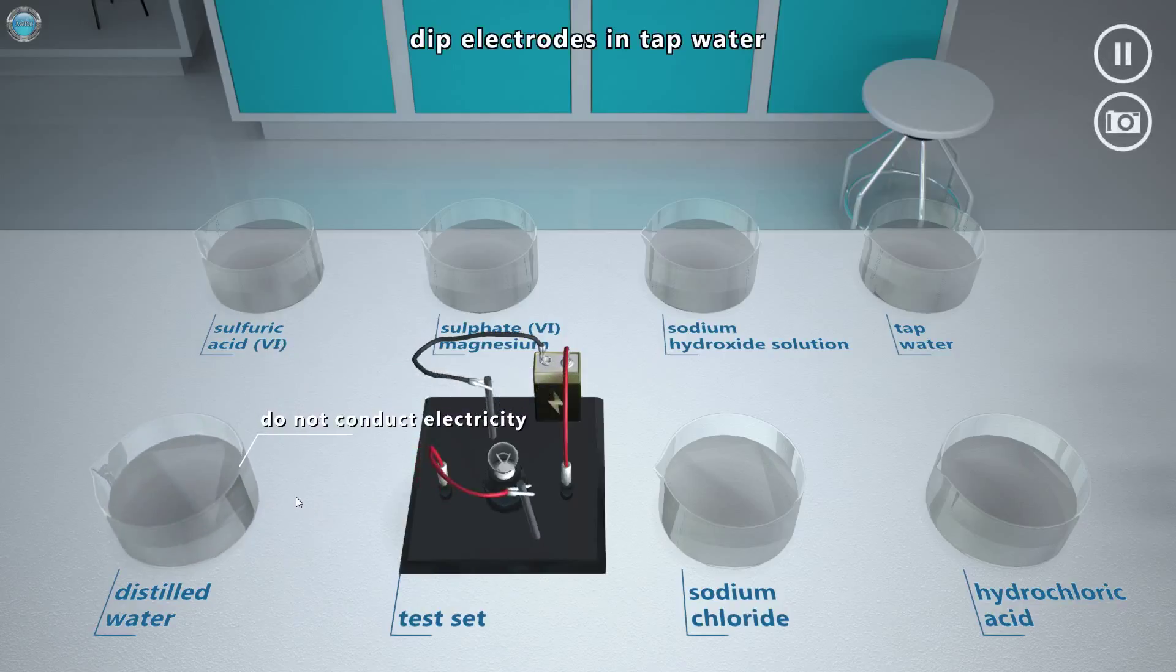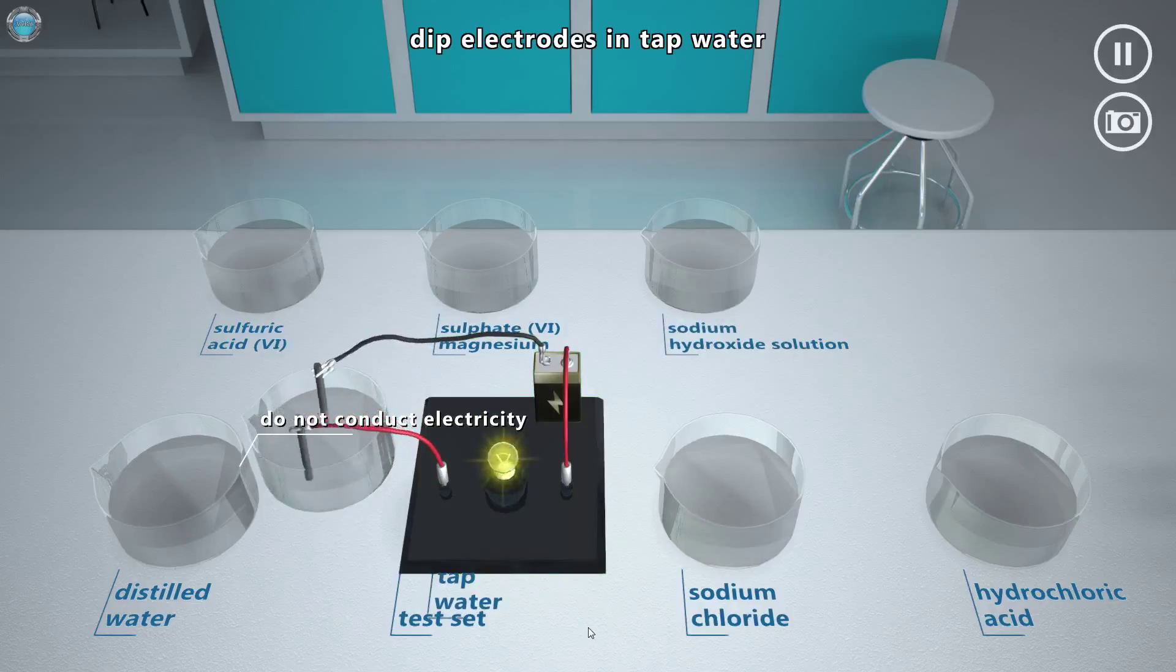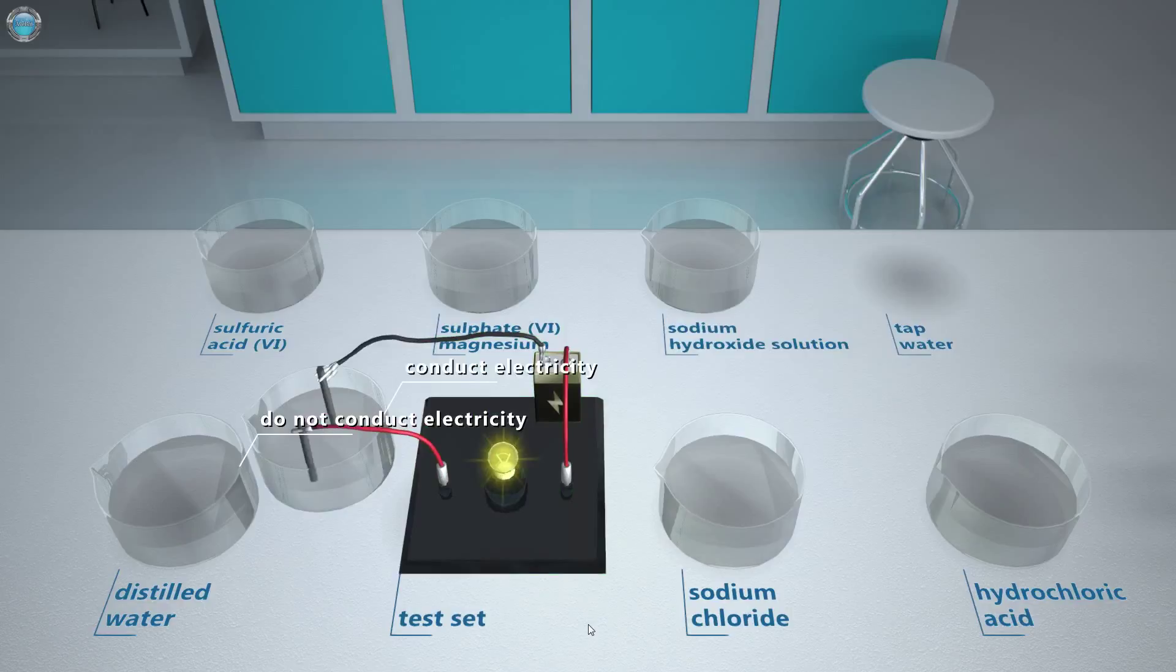Instead of distilled water, I will use tap water. Tap water should be just fine, yeah? Water which flows out of our tap, as well as so-called mineral water, contains substances which dissolved in it, including salts. And unlike distilled water, it conducts electricity. Okay. What's next?